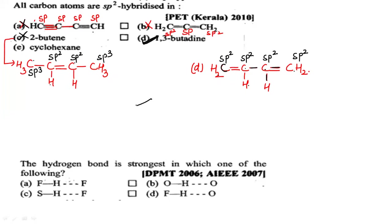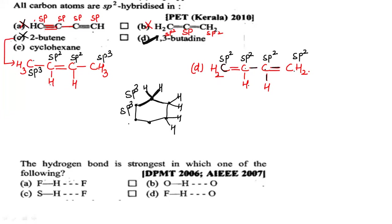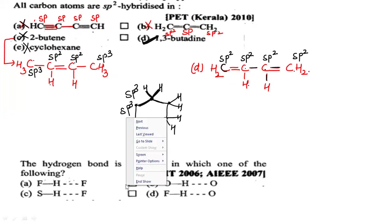Let me also explain cyclohexane: in its structure all the line-junction points are carbon atoms with attached hydrogens. Check any carbon — it has one, two, three, four groups — so every carbon in cyclohexane is sp3 hybridized. So cyclohexane is also wrong. Option D, 1,3-butadiene, is correct.